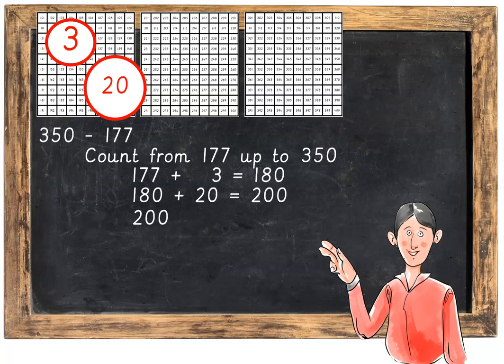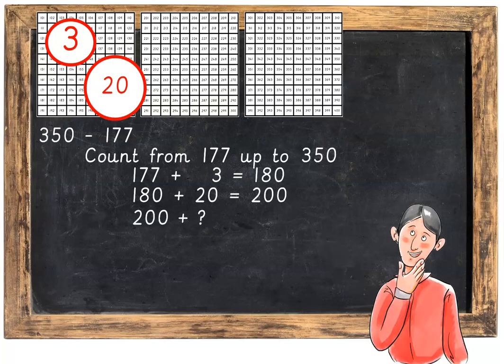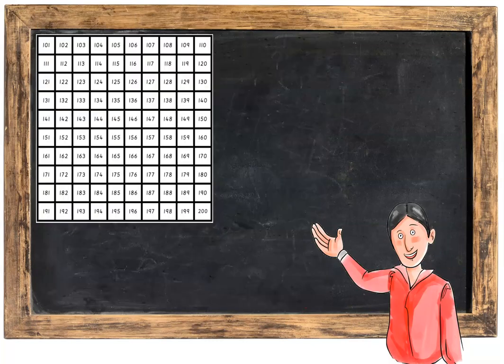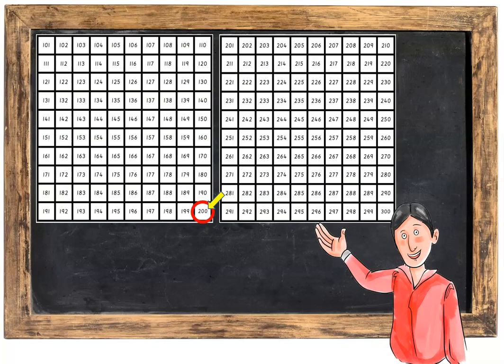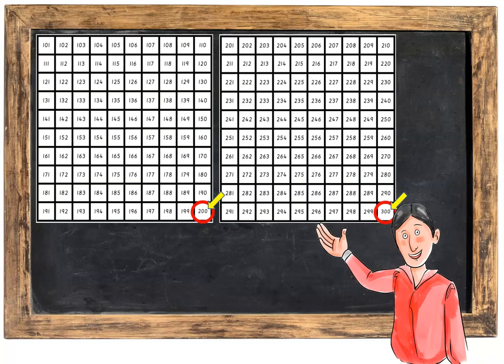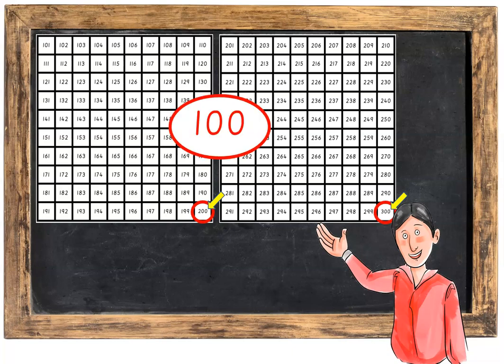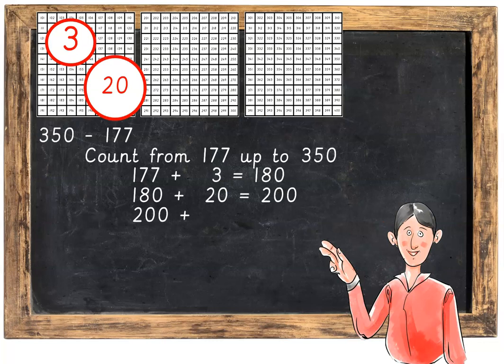Keep that 20 in your head. We've counted on 3 and we've counted on 20. Now starting on 200, we have to get to 300. That's going to be a jump of 100. So 200 plus 100 equals 300.